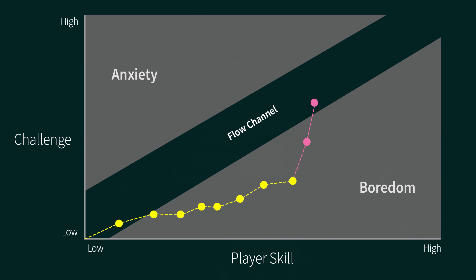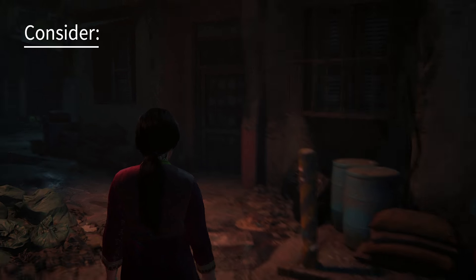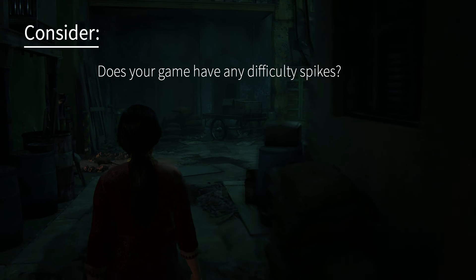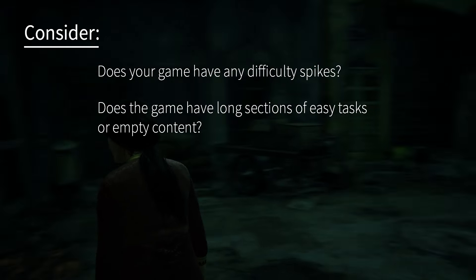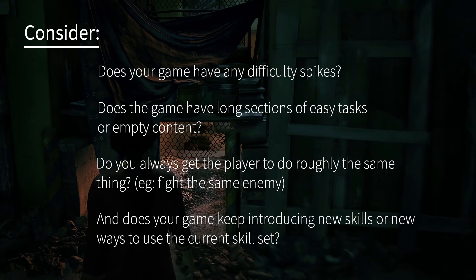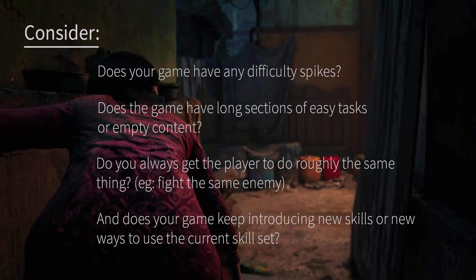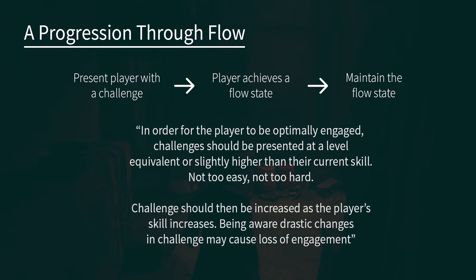I will discuss ways to do this in part two, as they are separate concepts. But just be aware that we want to keep the player in that flow state so they stay engaged. Some simple things to look out for: Does your game have any difficulty spikes? Does it have long sections of easy tasks or empty content? Do you get the player to do roughly the same thing a lot, like fight the same enemy? And does your game keep introducing new skills or new ways to use current skills? Our final reword: in order to keep the player optimally engaged, challenge them at a level equivalent or slightly higher than their current skill level — not too easy, not too hard — and continue increasing challenge as the player's skill improves, being aware that drastic changes in challenge may cause loss of engagement.